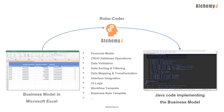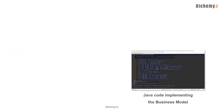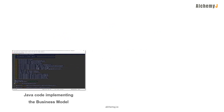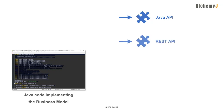Here are the API types AlchemyJ can generate. Java API — this is a standard Java package, and any Java application can call functions in the package. The other type of API is REST API, which is the most popular API standard today. Almost all applications could consume REST API.